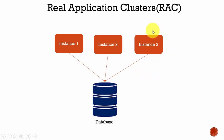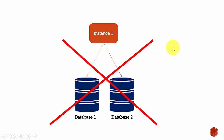Due to these reasons, we configure multiple instances. This way of configuring multiple instances is nothing but your Real Application Clusters configuration, also called as RAC. And now your question is: can a single instance be connected to multiple databases? And the answer is no. An instance can be connected to only one database — it cannot connect to multiple databases.